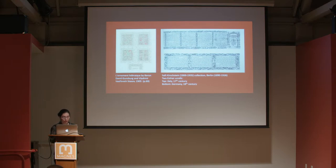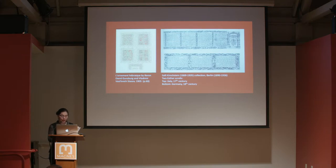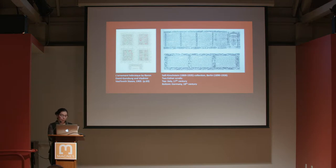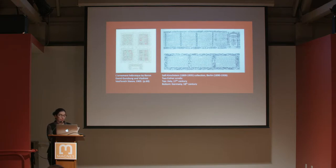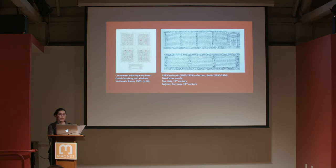On your left is another page from L'Ornement Hébreu, and next to it — unfortunately only in black and white — are two Esther scrolls from the collection of the Berlin writer Sali Kirschstein. Kirschstein was born in Poland in 1869 and grew up to become a successful businessman in Berlin. In 1890, he started collecting Jewish ritual objects and published numerous essays on Jewish objects. His collection was open to the public in a museum set up in his garage in his Berlin house until 1926, when he decided to donate it to the Hebrew Union College in Cincinnati. Today these objects are part of the Skirball Museum collection in Los Angeles.